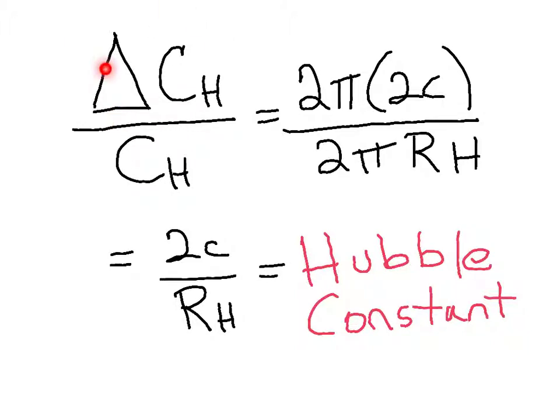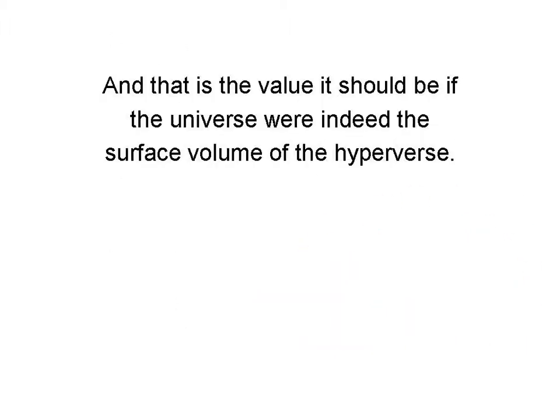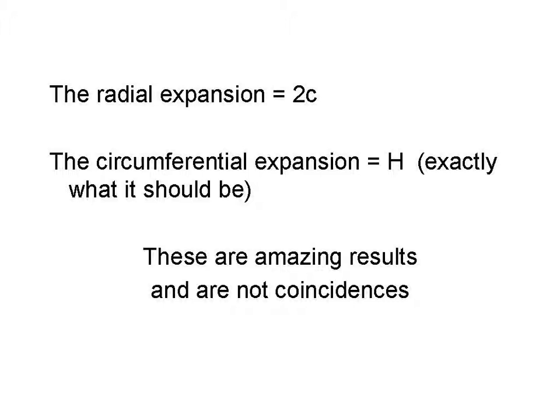Dividing delta c sub h by the circumference of the hyperverse gives us the rate of change of the circumference for each point on the circumference. The result is astounding. 2c over r sub h is the Hubble constant. And that is the value it should be if the universe were indeed the surface volume of the hyperverse. We've seen the radial expansion as 2c. The circumferential expansion equals the Hubble constant. These are amazing results and are not coincidences.